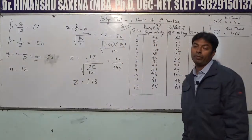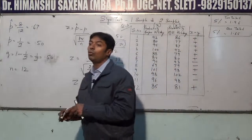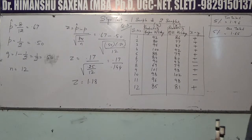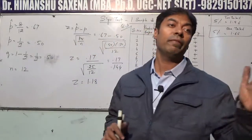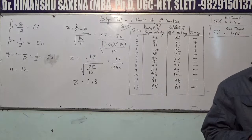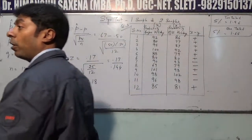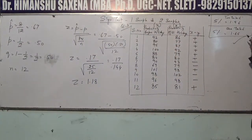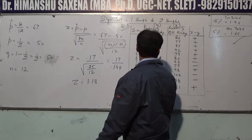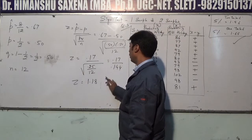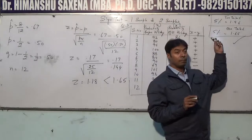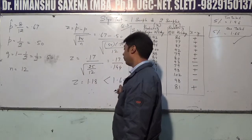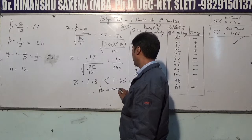Now we check if this is one-tailed or two-tailed. The question states the alternate hypothesis that productivity has increased. Since 'increased' appears, this is a one-tail test. At 5% significance, the one-tail critical value is 1.65. Since calculated Z = 1.18 is less than 1.65, the null hypothesis is accepted.